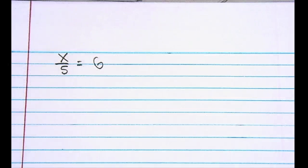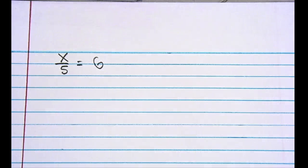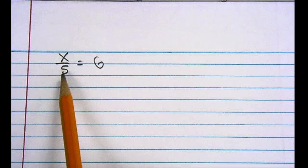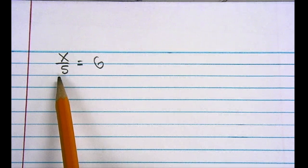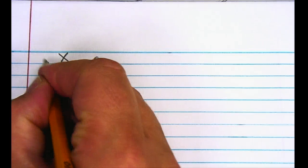An example of this might be something like x divided by 5 is equal to 6. We're doing this with inverse operations. I'm taking x and dividing it by 5, and I need to undo that. The opposite of dividing is multiplying, so the opposite of dividing by 5 will be to multiply by 5.